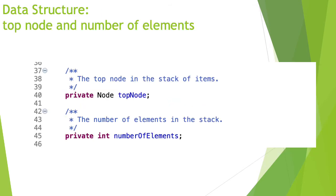From this perspective we also change the fields we keep. We only need the top node, since that is the node we always work with. We also store the number of elements. You could compute the number of elements by traversing the entire list, but that's not efficient. Keeping the count allows you to return the size of the stack faster. It's duplicated information, but it's done for efficient processing.